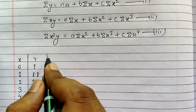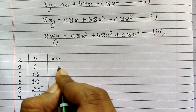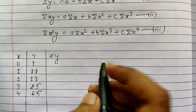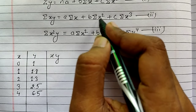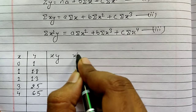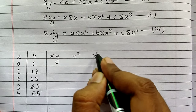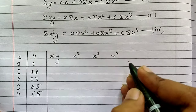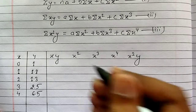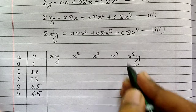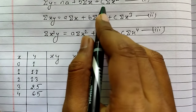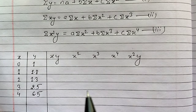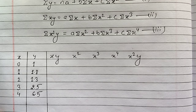From the equations we can conclude that we need the values of summation x, summation y, summation x squared, summation x cubed, summation x to the power 4, and summation x squared y. We need to find each of these terms and their summations, so that we can substitute them into the equations and solve for a, b and c to get the final answer.